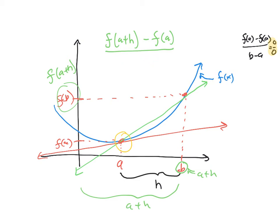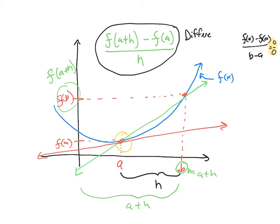So I'll rewrite the h clearly because it's important. This thing we just made — it's still our average rate of change on the green line — but it also has a special name: this is called a difference quotient.